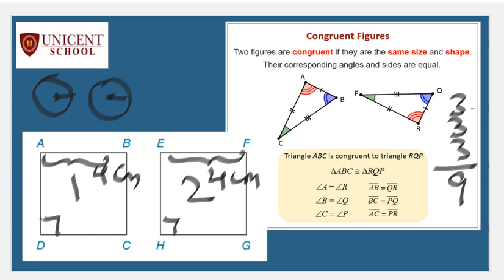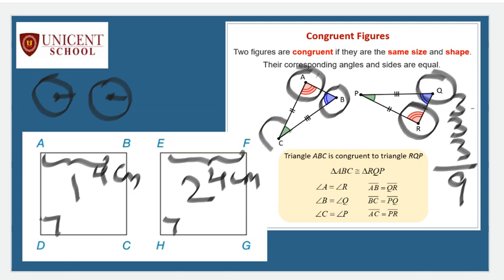Let's learn how to represent congruent parts and how to compare the sides, angles, and vertices. Angle A is to be compared with angle R, angle B with angle Q, and angle C with angle P. Similarly for the sides - AB is equal to QR. The corresponding side must be taken into consideration whenever we need to prove that two triangles are congruent. But we do not need to use all nine parts.